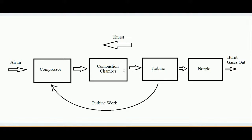These burnt gases are then allowed to pass through a turbine. The job of the turbine is to convert the enthalpy of the compressible fluid into work done. In the turbine, the enthalpy content of the air decreases and work is developed. Whatever work is developed in the turbine is supplied back to the compressor itself to run it.